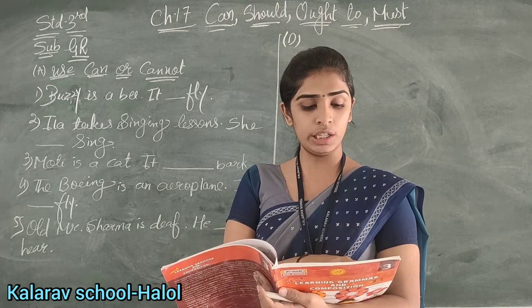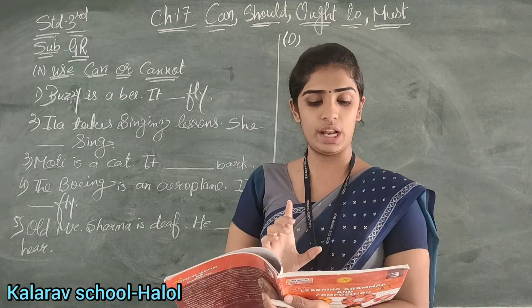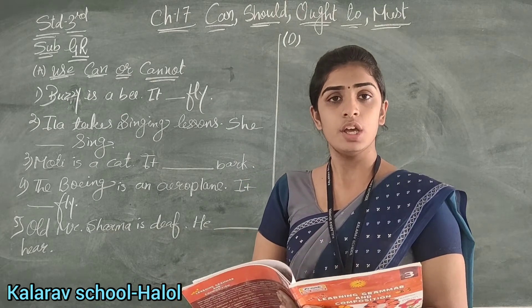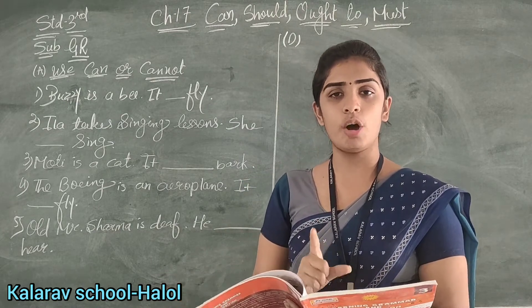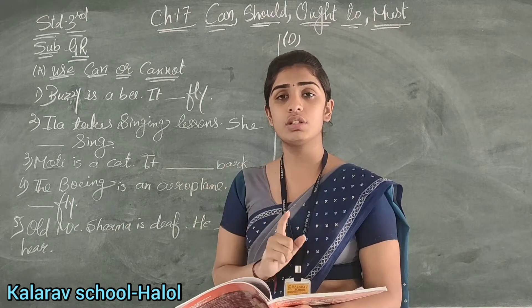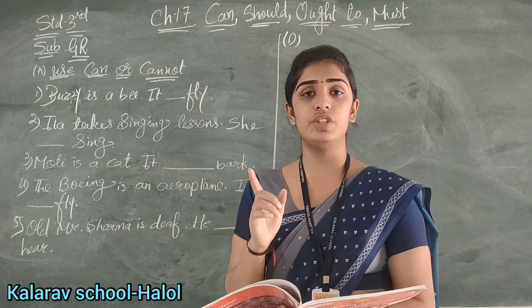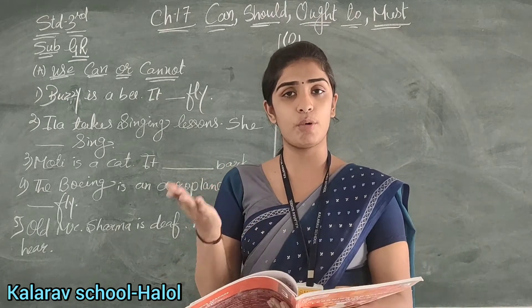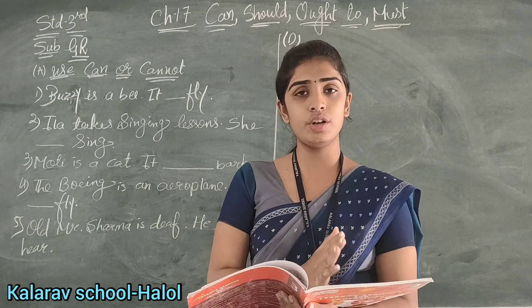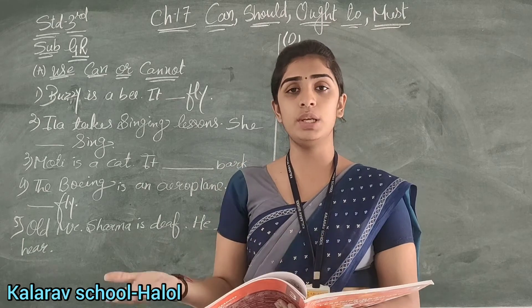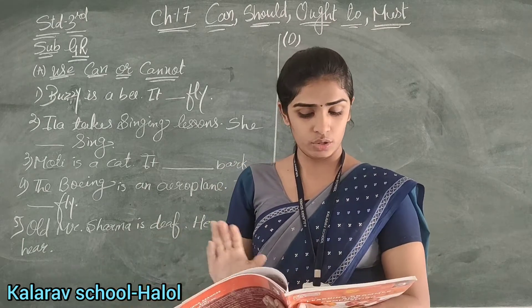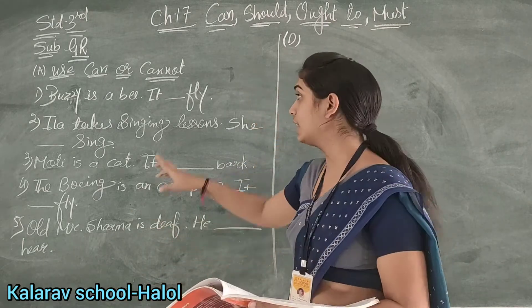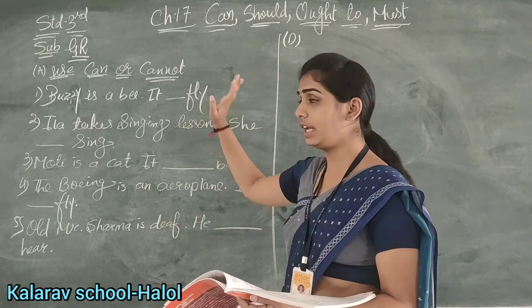The modal verb can or cannot is used to tell if it is possible for the subject to do the given action. We use can or cannot when we are looking for an action that is possible — it can be done or it cannot be done. First exercise: fill in the blanks with can or cannot.